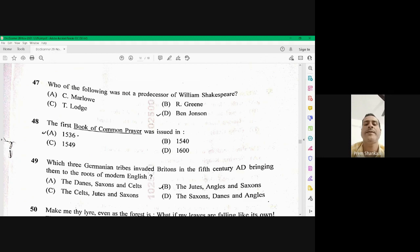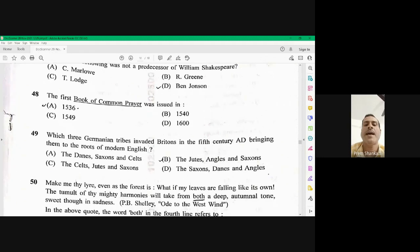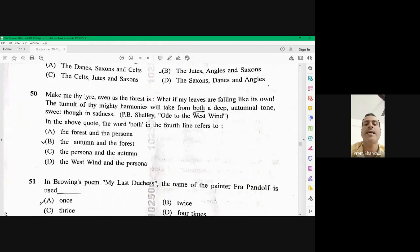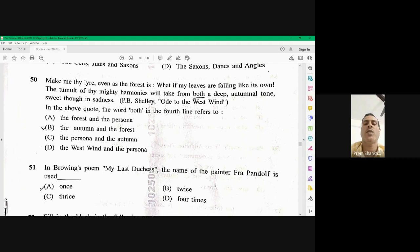Question number 50, make me thy liar, even as the forest is. What if my leaves are falling like its own? The tumult of thy mighty harmonies will take from both a deep, autonormal tone, sweet though in sadness. So these lines are taken from P.B. Shelley O to the west wind. In the above quote, the word both refers to, here the both refers to the poet's persona and the autumn. Poet's persona, persona and the autumn.